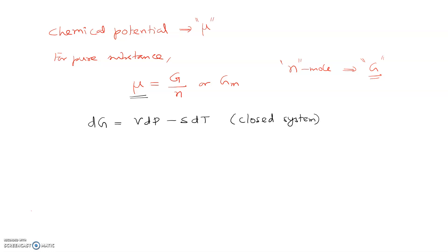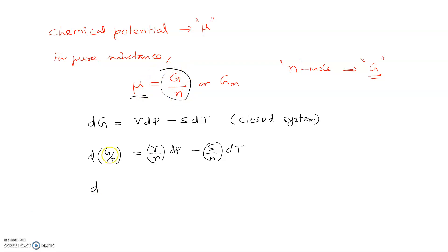Suppose this equation is for n moles of substance. For one mole, divide both sides by n. As stated before, chemical potential is nothing but Gibbs free energy divided by number of moles, so G/n becomes mu. Therefore, dμ equals V/n — which gives molar volume — times dP, minus S/n — which gives molar entropy — times dT. This is a very useful equation, applicable for a closed system and for a pure substance.